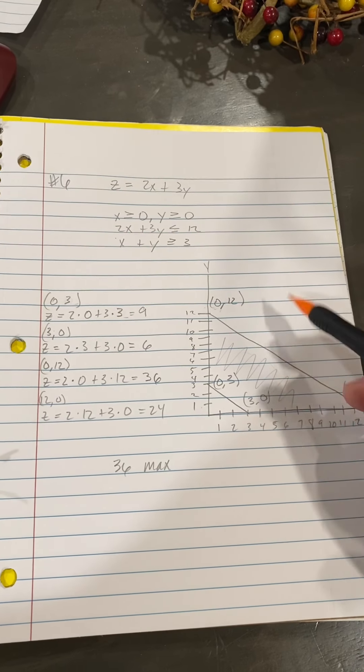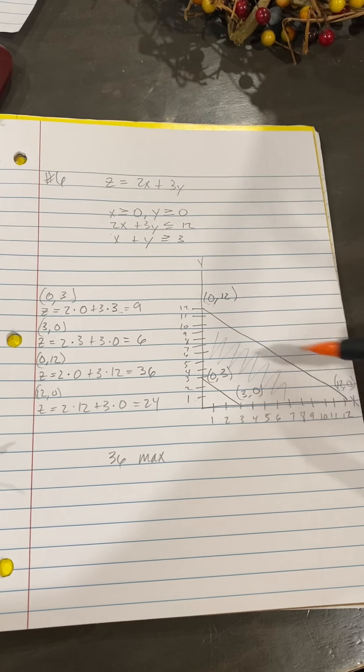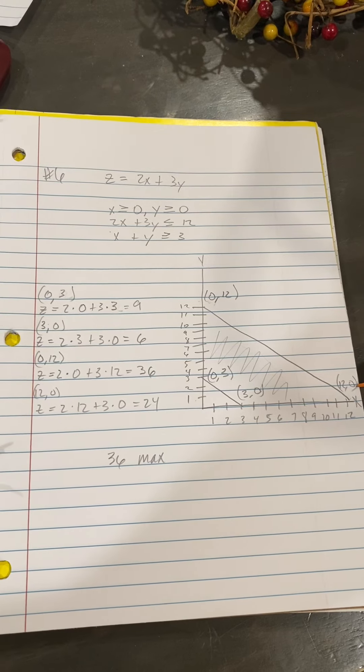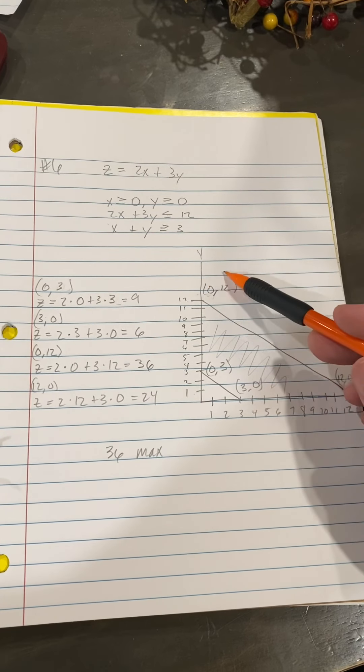Then I plotted accordingly: (0,3), (12,0), (0,3), (3,0), representing X and Y.